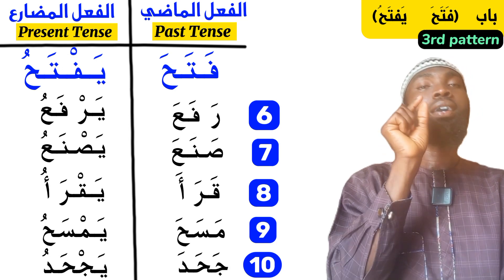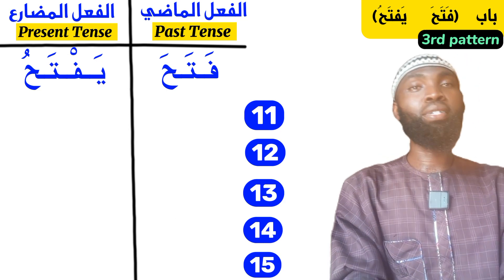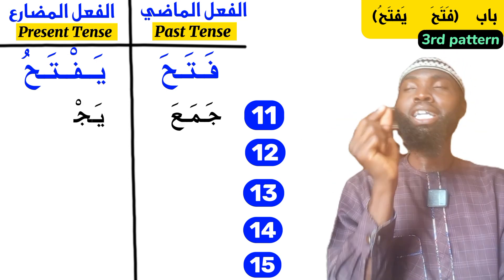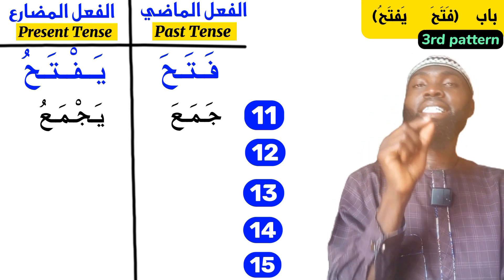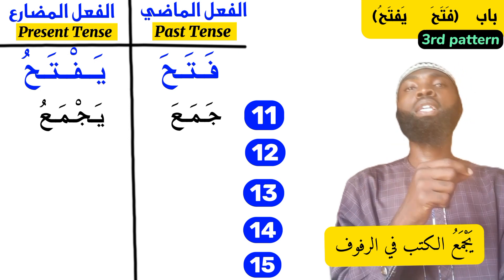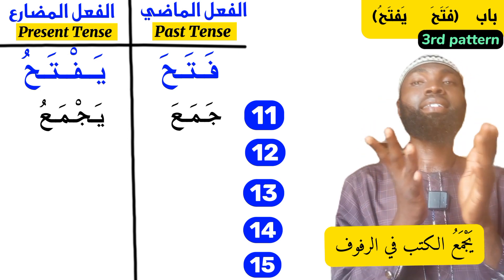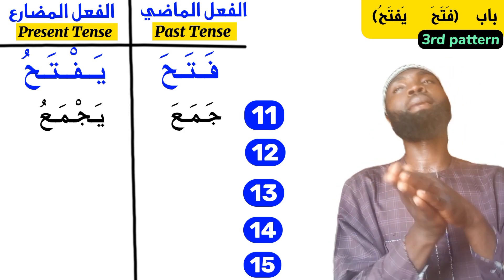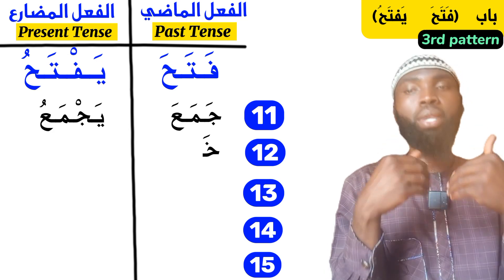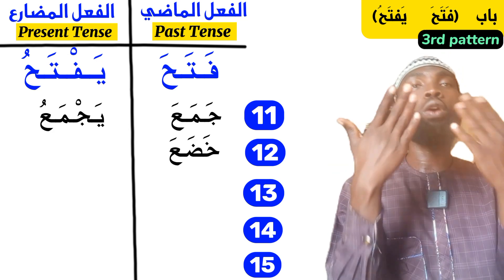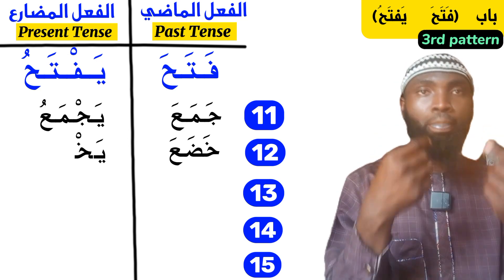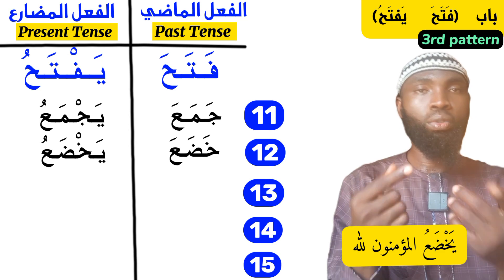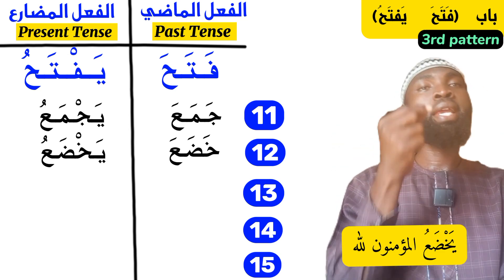Another word is jama'a — 'he gathered, he collected together.' The present tense would be yajma'u. An example: yajma'u al-kutuba fi ar-rafufi — 'He is gathering the books in the shelf.' Another example is khada'a — 'to be humble, he humbled himself.' The present tense is yakhda'u. An example: yakhda'u al-mu'minuna lillah — 'The believers are humble towards Allah.' Khada'a yakhda'u also falls under this category.